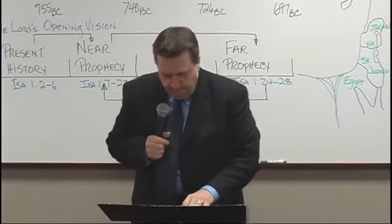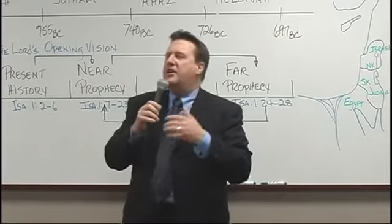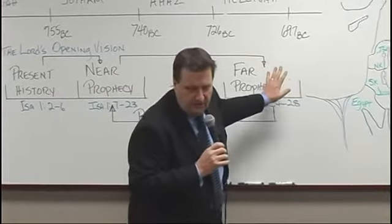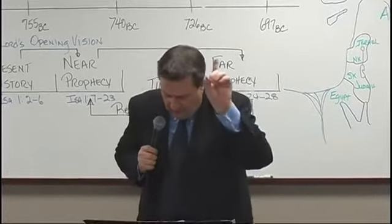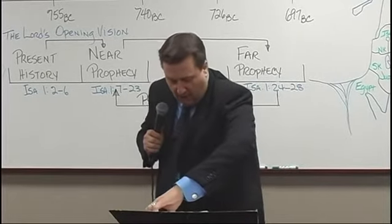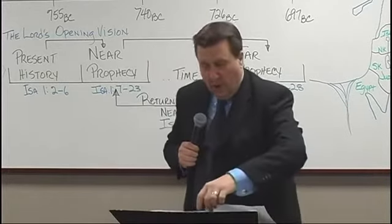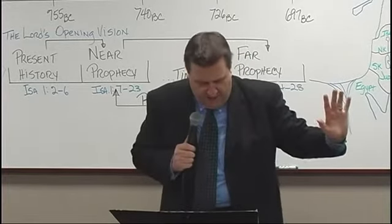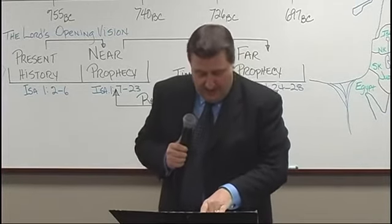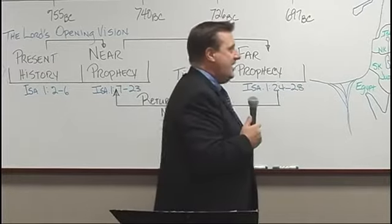Now we've got the far prophecy — here's where time skips. You're going to get the feel of it. Just as we went from the present to the near, now we're going to skip over to the far prophecy. Verse 24: 'Therefore the Lord God of hosts, the mighty one of Israel: I will be relieved of my adversaries and avenge myself of my foes. I will also turn my hand against you and will smelt away your dross as with lye and will remove all of your alloy.' In other words, whatever you think is good, it's not good enough for me. Then verse 26: 'I will restore your judges as at the first and your counselors as at the beginning. After that you will be called the city of righteousness, a faithful city.' That's when He returns — this is talking about His return.